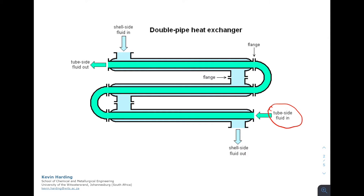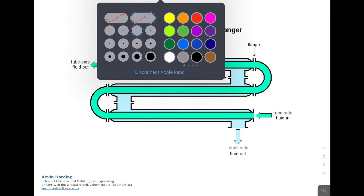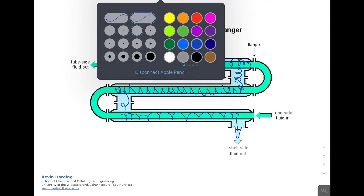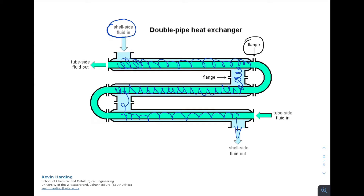The cold fluid enters on the shell side at the top — what we previously called the jacket — and flows down the length of the exchanger, cutting across and back along again, then exits at the bottom right. At the flanges on the top left and bottom right we can remove those pipe sections for cleaning. This is the more optimized double pipe heat exchanger system.